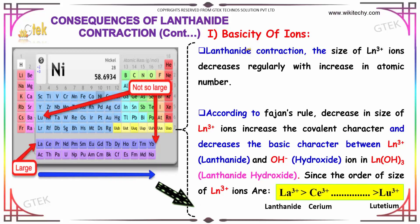Let's talk about the consequences. The first one is basicity of ions. Due to lanthanide contraction, the size of lanthanide 3+ ions decreases regularly with increase in atomic number. According to Fajans' rule, the decrease in size of Ln3+ ions increases the covalent character and decreases the basic character between Ln3+ and OH- ions in Ln(OH)3.